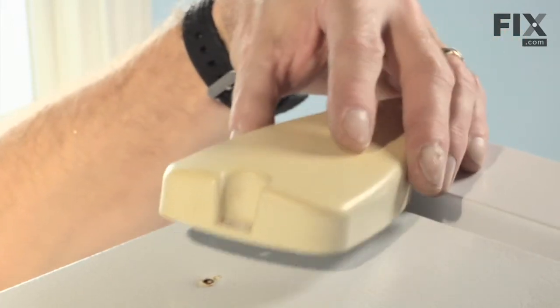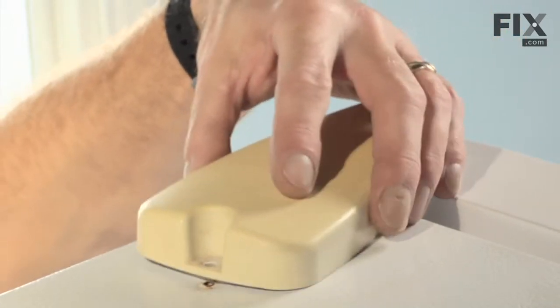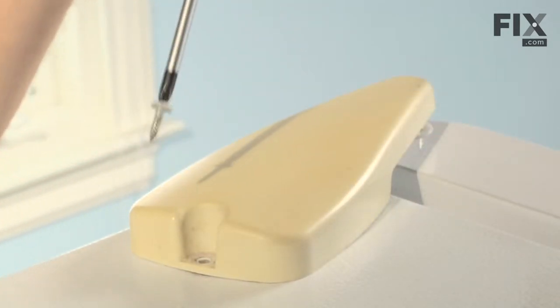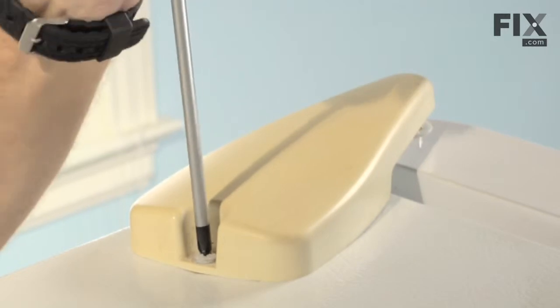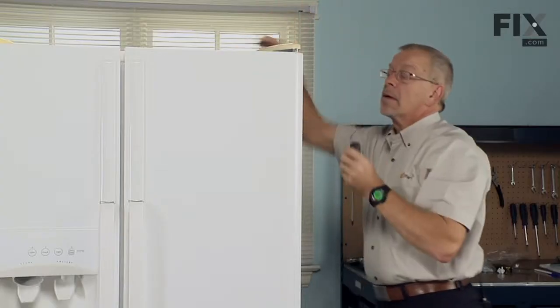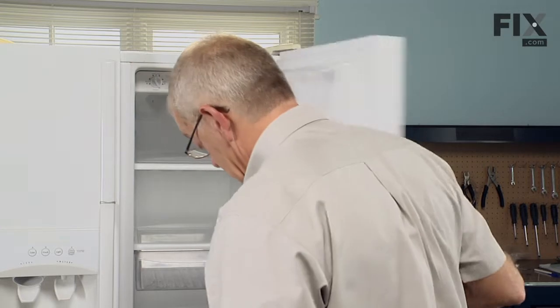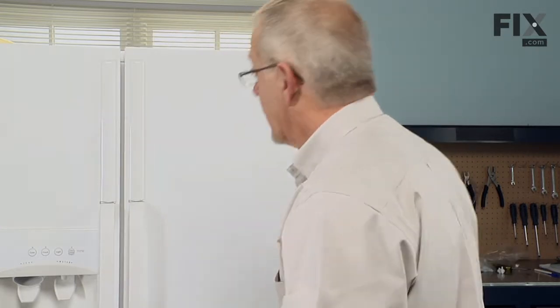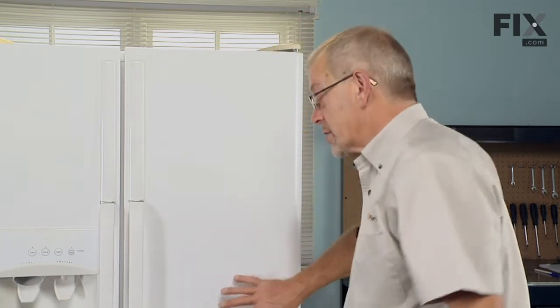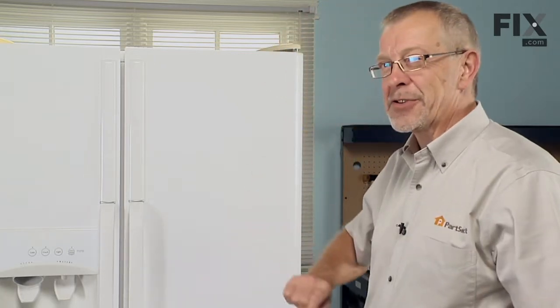Now we're ready to reinstall the hinge cover. Reinstall the Phillips screw and check the operation of the door. Now we're ready to reinstall all the shelves and don't forget to turn the refrigerator back on.